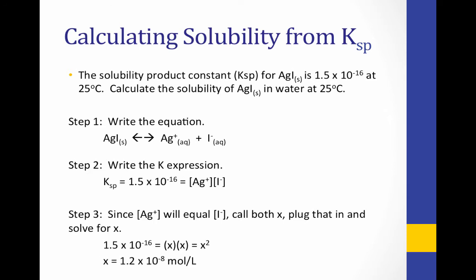Solving for x, we find that the solubility of silver iodide is 1.2 × 10⁻⁸. In other words, in every liter of solution, we can dissolve 1.2 × 10⁻⁸ moles of silver iodide. This also gives us a silver concentration and an iodide concentration of 1.2 × 10⁻⁸ each, since it is a one-to-one ratio.